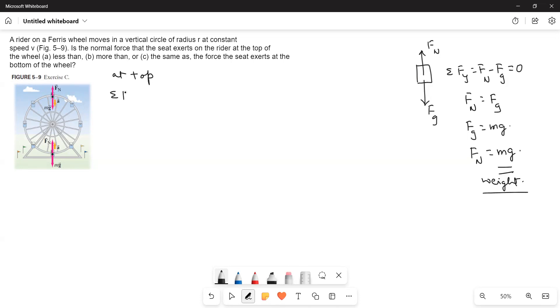Sigma Fy is equal to Fn minus Fg, because Fn is acting upwards, Fg is acting downwards. And then acceleration is downwards. Am I right? So, minus Ma. I will take downward direction as negative.